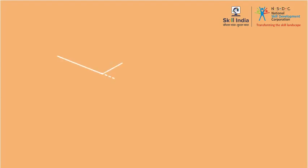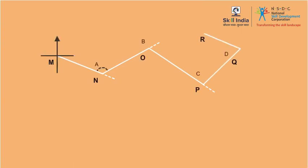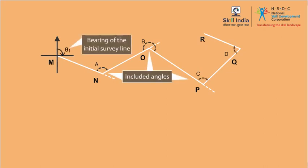Now, let us say you have a map or a plan which shows measurements of the included angles between successive survey lines and the measured bearing of the initial survey line.